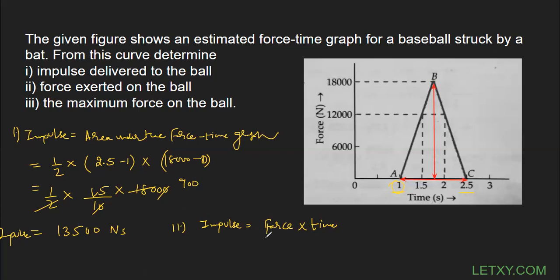Force equals impulse upon time. The time is not given, but we can calculate it. Impulse is 13,500, time - the final time is 2.5 and initial time is 1, so this is 13,500 upon 1.5.